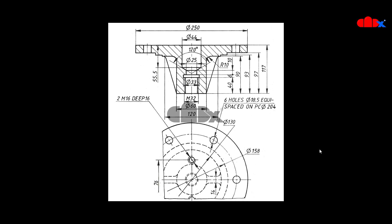Hello friends, Satyendra here. In this video, let us exclude ribs from the section view in Creo Parametric. If you see this drawing, it is in first angle of projection. This is the top view and this is the front view. In this front view you have a section, and you have two ribs here. These ribs are not coming under this section, even though the section line is passing through them. Today we will try to exclude ribs from the section view using SOLIDWORKS and Creo Parametric both.